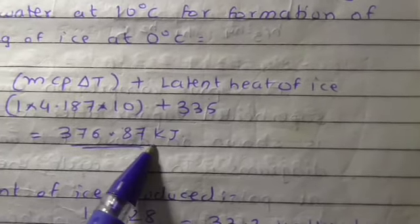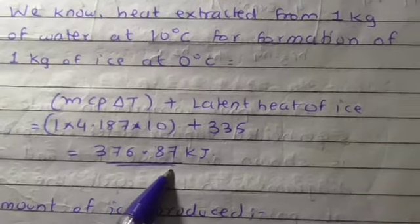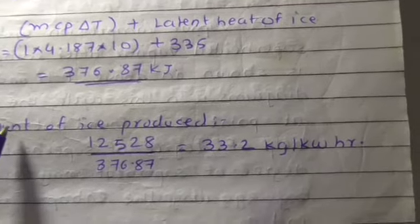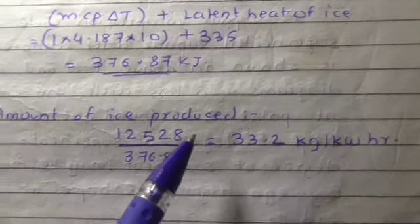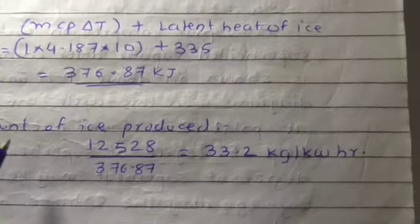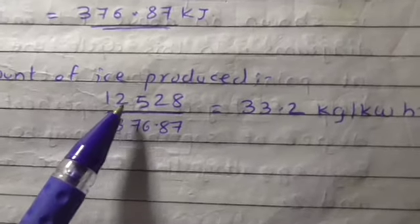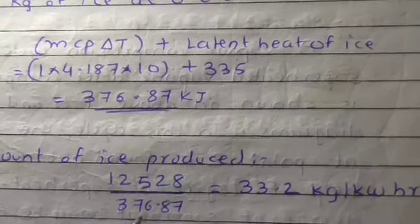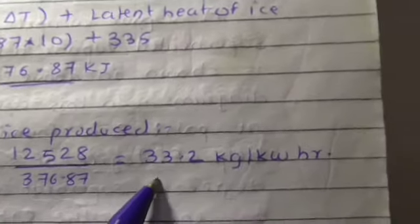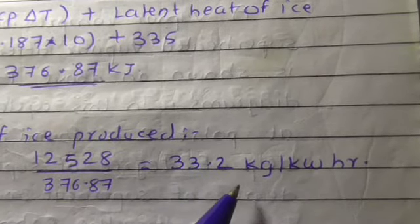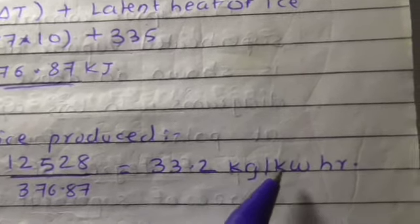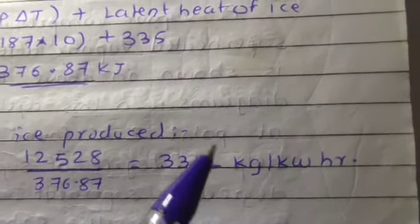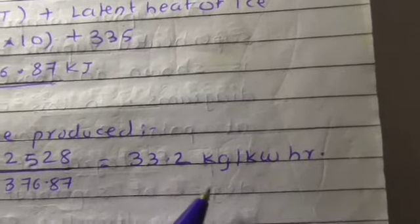Now we have to find the last point: amount of ice produced, how much kilogram per kilowatt hour. The amount of ice produced is 12,528 divided by 376.87 kilojoules, and we get 33.2 kilograms per kilowatt hour. The amount of ice produced is 33.2 kilograms per kilowatt hour.